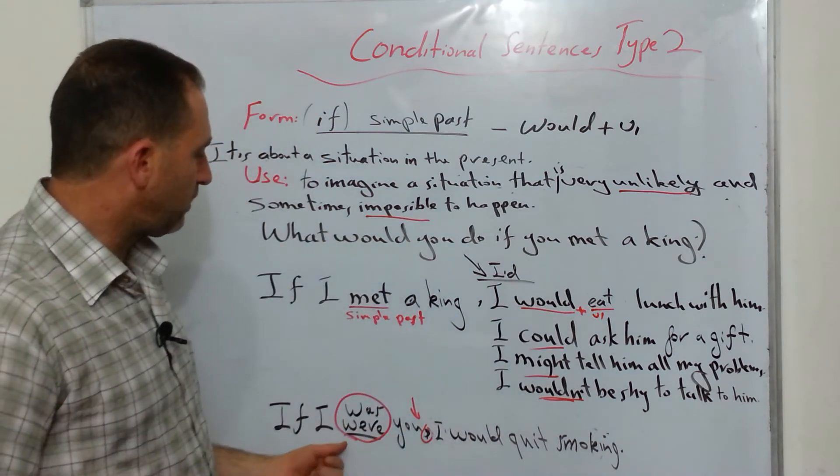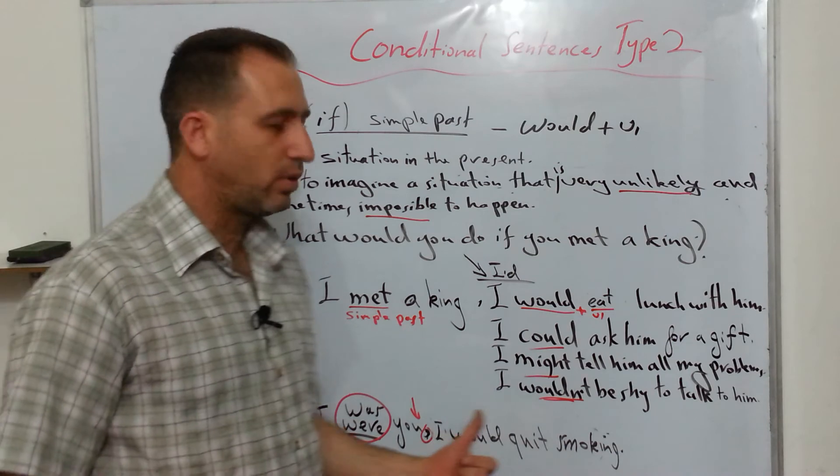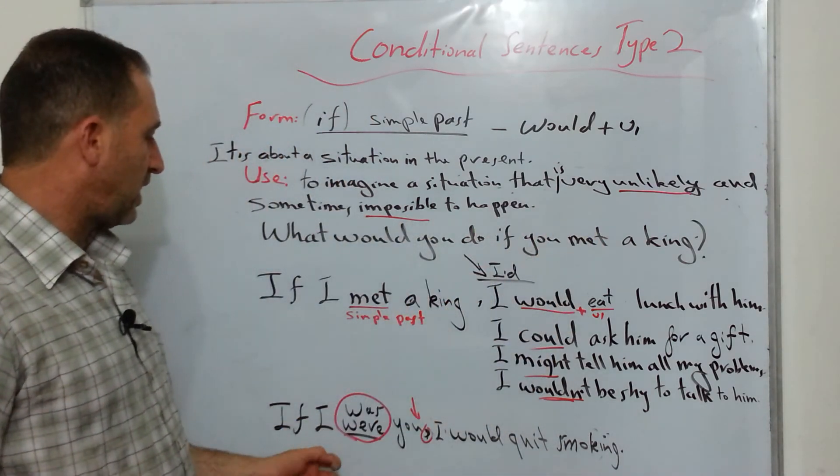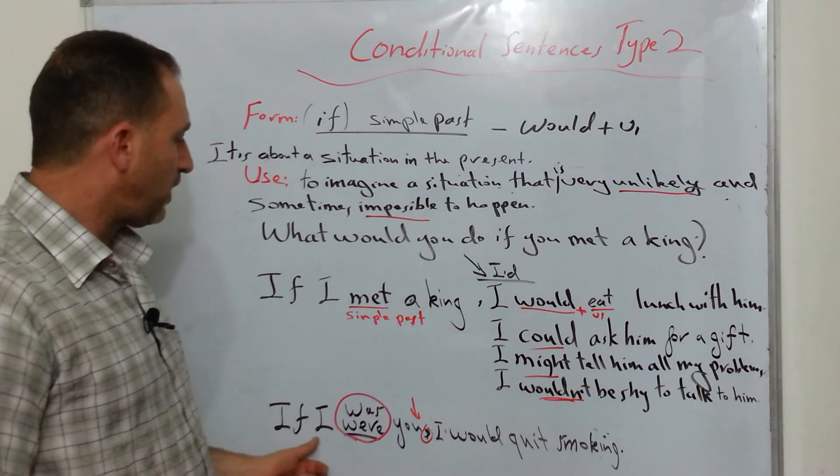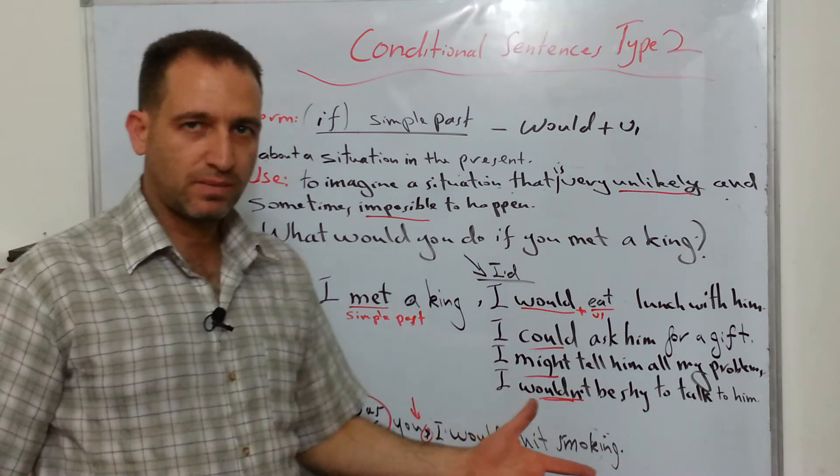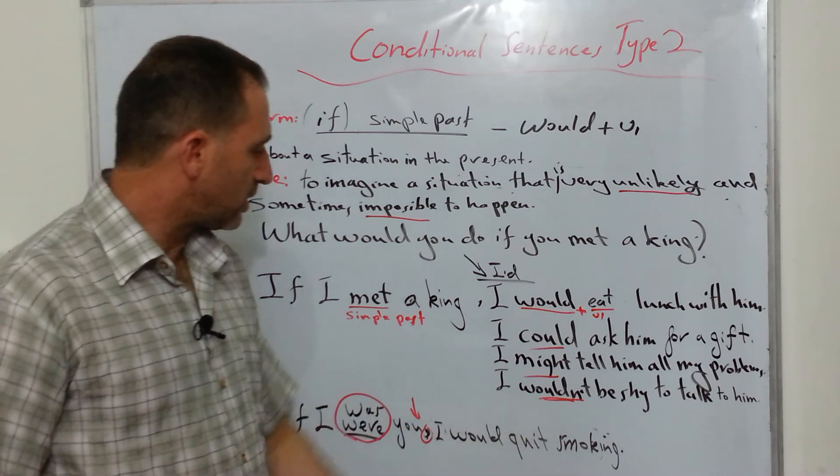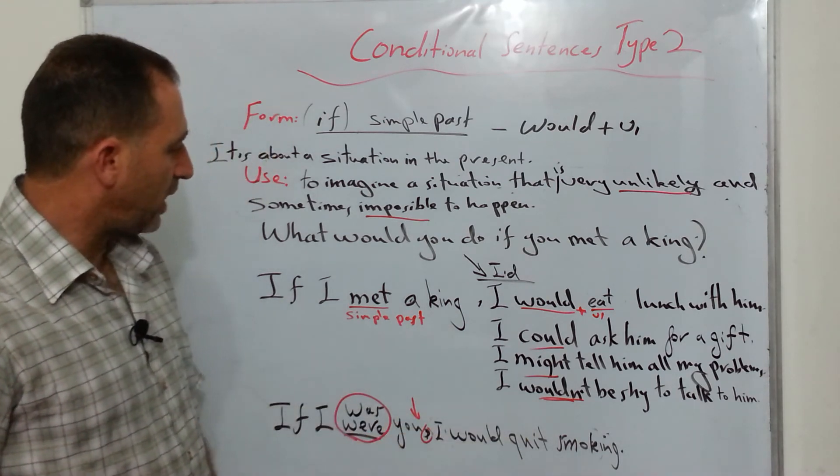And, but when it comes to British English, I think it's acceptable also to say if I was, so you can use both actually. If I were you and if I was you, both are correct. I would quit smoking. I had one last note here.